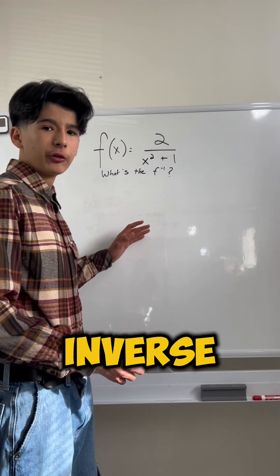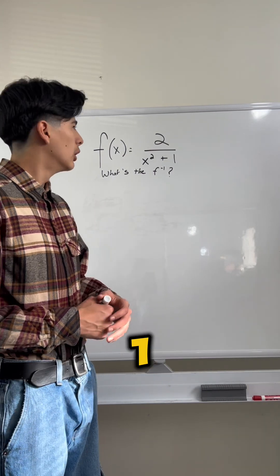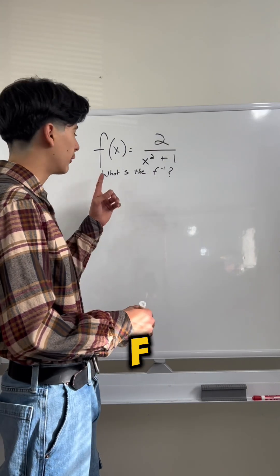So, now we could find the inverse function of our original expression, 2 over x squared plus 1. So, what I'm going to do right now is I'm just going to replace f of x with y.